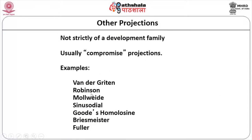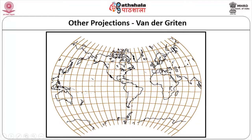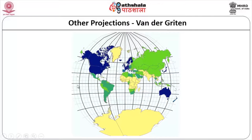Still, they are all equally important. Van der Grinten and Robinson are among the most popular — Robinson is written about in many books on cartography. Others include Mollweide, Sinusoidal, Goode's homolosine, Bremister, and Fuller. These people have developed different projections for different countries and purposes. They do not follow any specific shape — neither cylindrical nor conical.